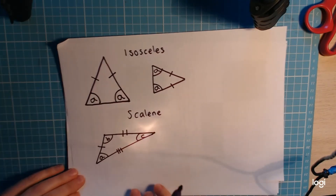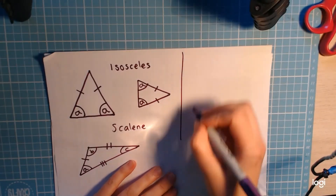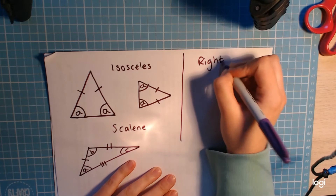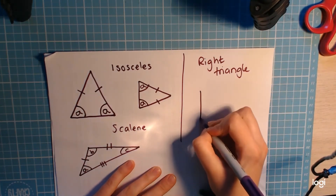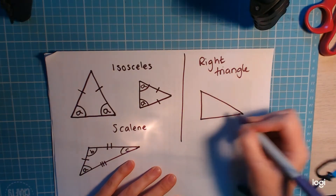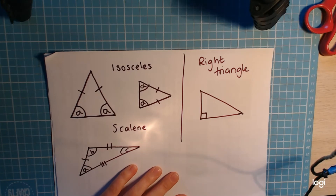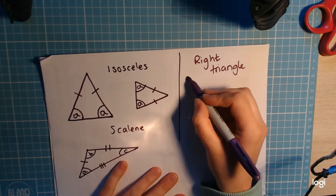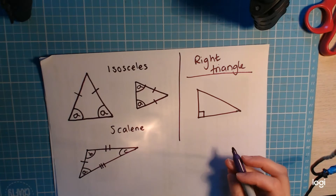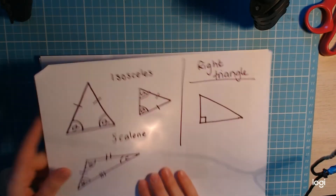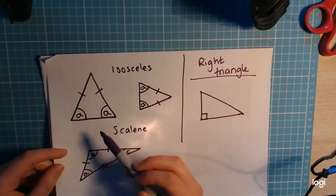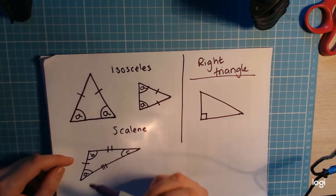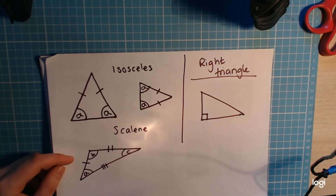The last triangle type I mentioned is a right triangle — that is a triangle which has got a right angle. Triangles are very popular in exams because we can use them for Pythagoras, for angles, for trigonometry — they come into so many different topics and usually come up quite often, so it's worth knowing your stuff with those.